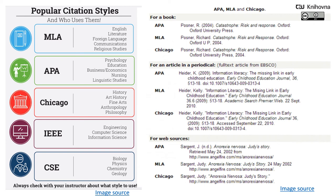Requirements for citation are determined by the citation style. There are thousands of different citation styles, so there is no universal formula for how to put a citation together. As you can see in the picture, every style is a little different. If you are interested in learning what citation styles are used in the individual faculties of our university, you can click the link below the video — there is a list of the citation requirements of our faculties.